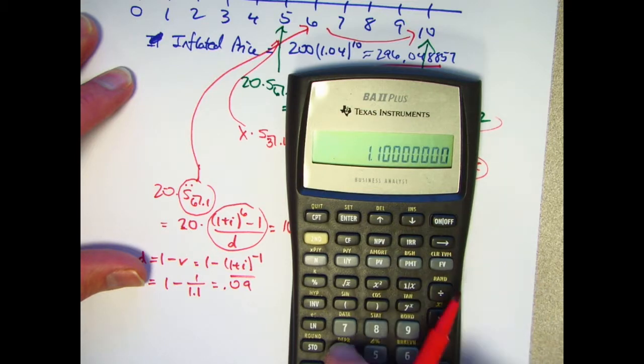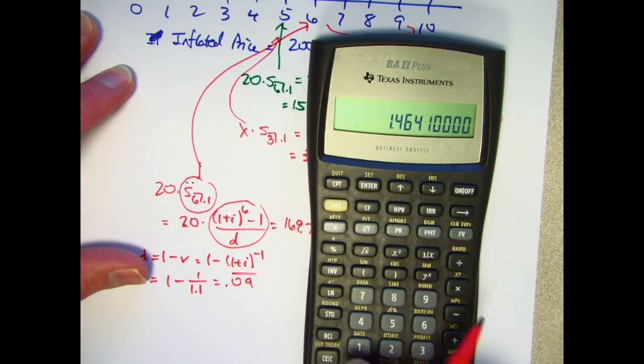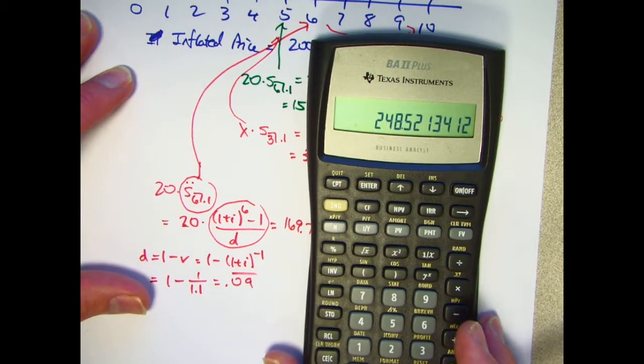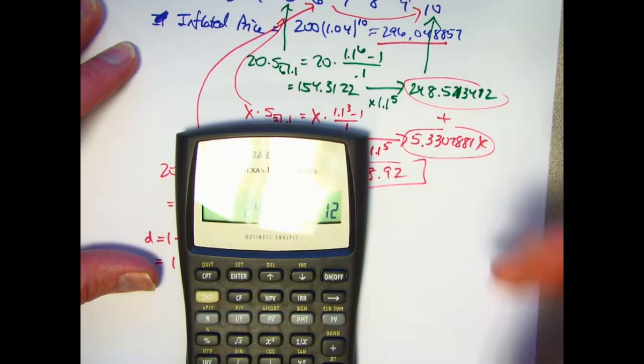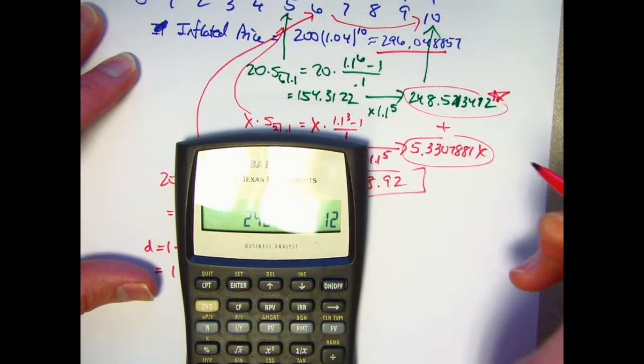1.1 to the 4th power is this. If you multiply that by what's in register 0 now, that future value of the annuity due, you get 248.52, which is the exact same thing we got right here when we thought of it in terms of annuity immediate.